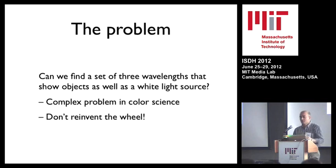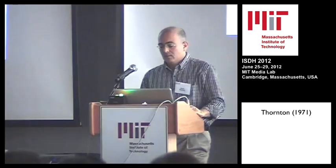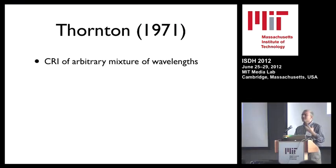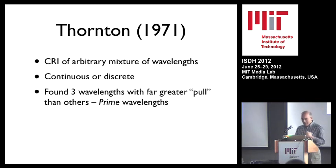Let's see if someone else has looked at this problem from the illumination point of view. William Thornton in 1971 — nothing to do with holography — simply wanted to find the best combination of wavelengths in a white light source for everyday use: supermarket, home. He looked at the color rendering index, a measure of how good a color source is — how close to a standard white it shows you. He did a full analysis and found that there are actually three parts of the spectrum which are far more important than others: 450, 540, and 610 nanometers.